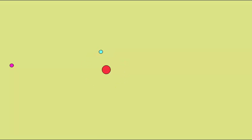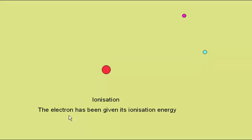The electron is orbiting, the other electron comes in, collides with it, giving it sufficient energy to escape. This is now a charged particle, or an ion, so that was ionization. The electron has been given its ionization energy due to the collision.